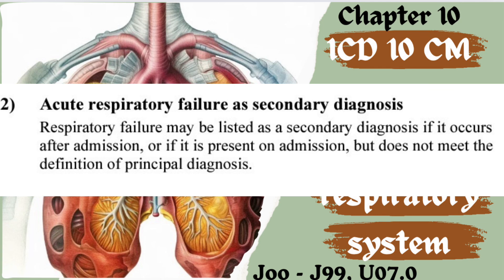The second point is acute respiratory failure as secondary diagnosis. When is it coded as secondary? Because it is not the reason for admission. Acute respiratory failure may be listed as a secondary diagnosis if it occurs after admission, or if it is present on admission but does not meet the definition of principal diagnosis — meaning there is some other condition that prioritizes the reason for admission.